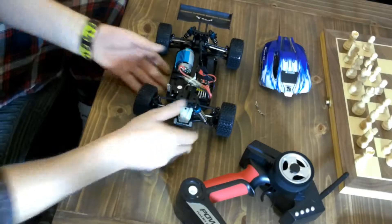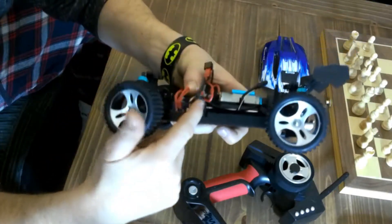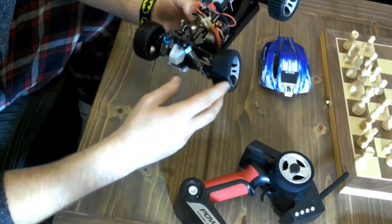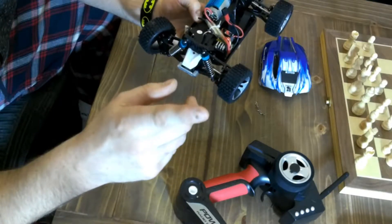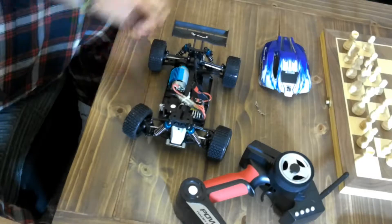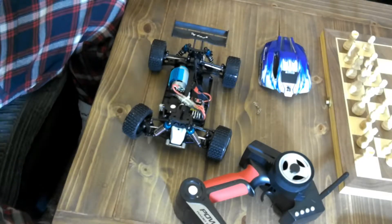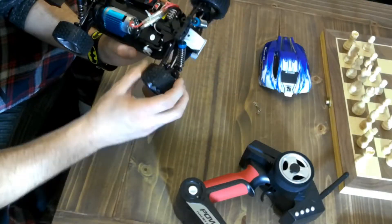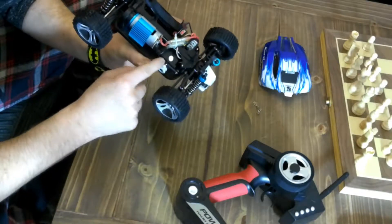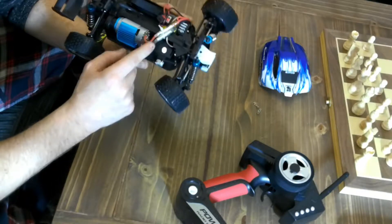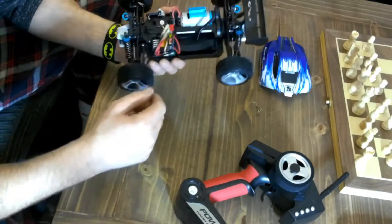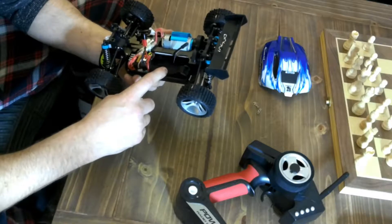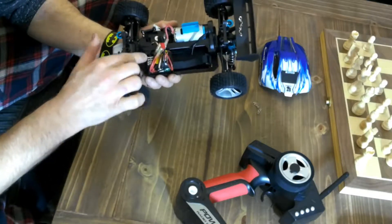This little bugger here, the ESC, burnt out on me. I took it out for the first run and it was wicked, really fast. Then the next day my son had a go and he drove it straight into a curb and it stopped instantly. I thought he'd broken something, so I was looking at the suspension linkages, everything's fine. The motor was hot and smelly, the battery hot and stinky, but the ESC was really hot and really stinky.